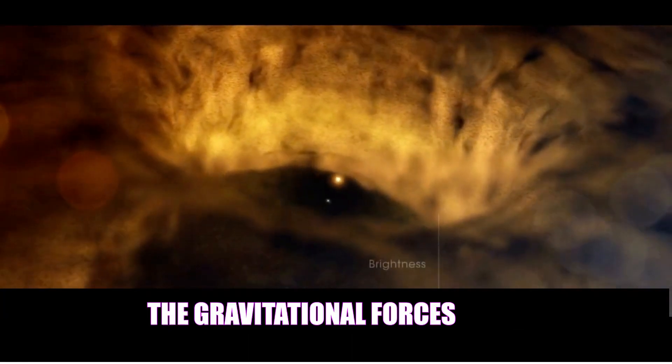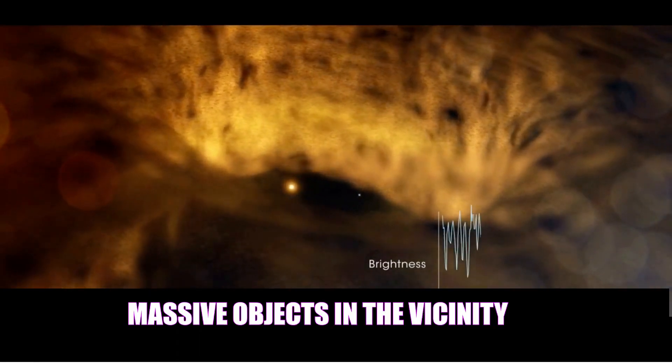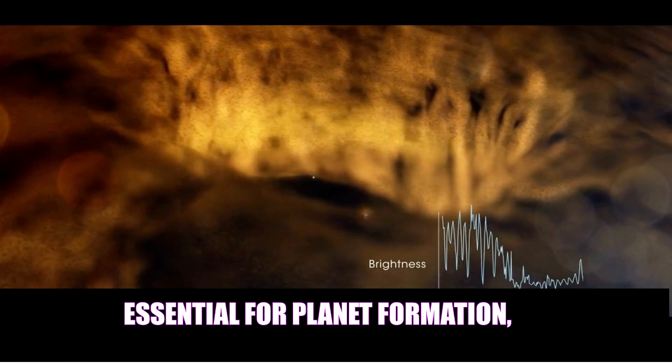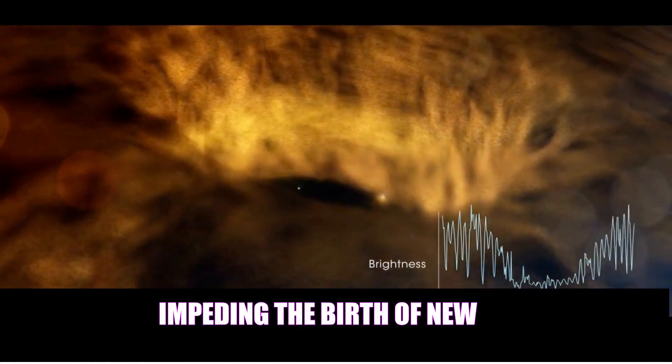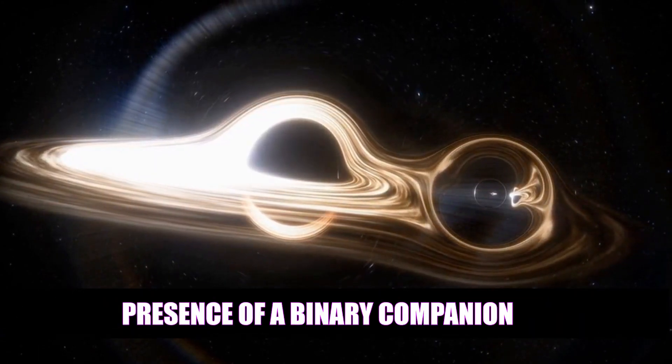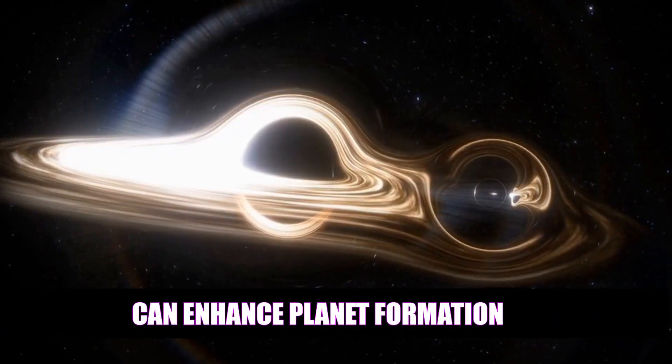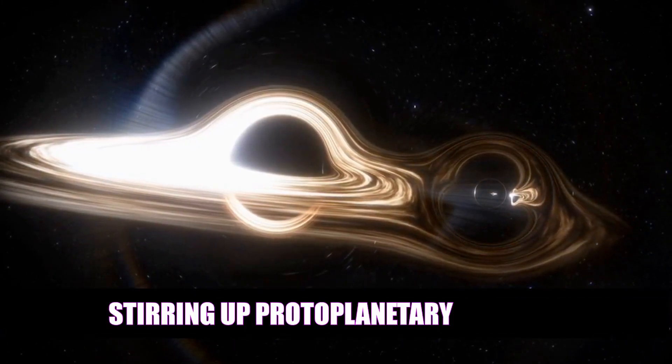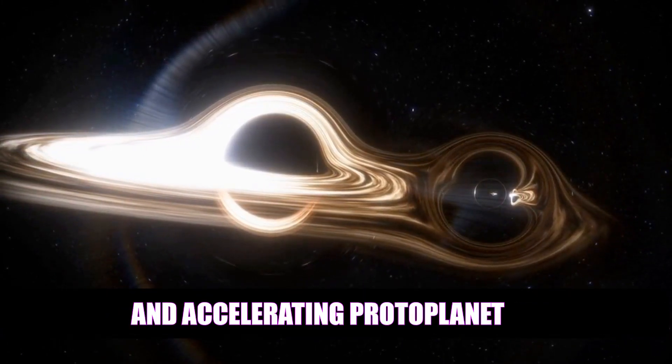The gravitational forces of massive objects in the vicinity disrupt the rocky grain disks essential for planet formation, impeding the birth of new worlds. Nevertheless, simulations suggest that the presence of a binary companion can enhance planet formation within stable orbital zones, stirring up protoplanetary disks and accelerating protoplanet growth.